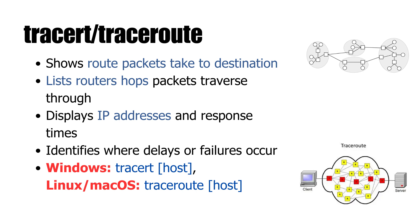The tracert command on Windows or traceroute on Linux and macOS is a handy tool for checking the exact path your packets take to reach a destination. Think of it like a roadmap for your internet traffic. When you run tracert google.com on Windows or traceroute google.com on Linux or macOS, your computer pings each router along the way and shows you a list of every hop it takes to get to the final host. You'll see the IP addresses of those routers, plus the response time at each step.